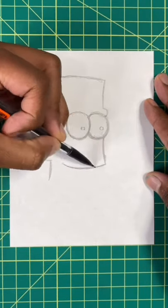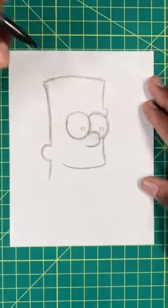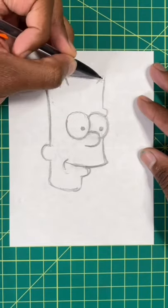Now we're going to draw out the front of his face and his mouth. After that, we're going to draw out his little button nose. For our last step, we're going to draw in Bart's hair.